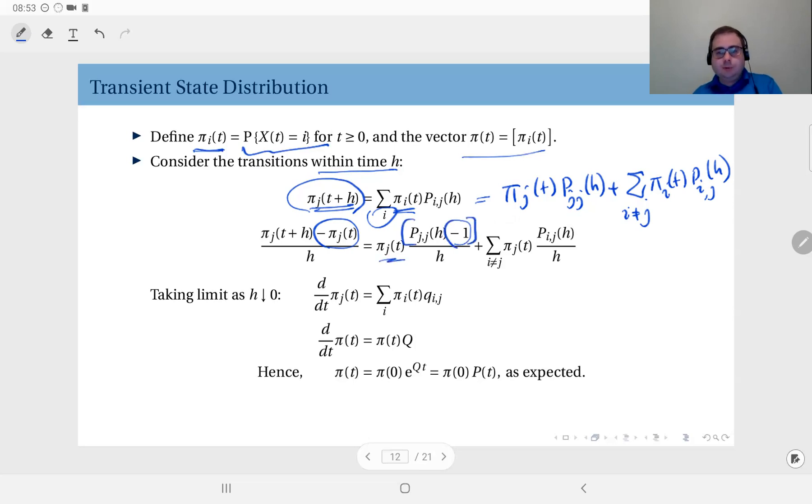Then divide both sides by h, and then take the limit as h goes to zero. On the left hand side, you see the derivative of π with respect to time. And on the right hand side, by definition, you see π_j times q_jj. From this term, I will get q_jj, and from this term, I will get q_ij. And therefore, this whole thing is going to be the sum over all i's π_i times q_ij. And in matrix notation, we can write this as the derivative of π is equal to π times Q.